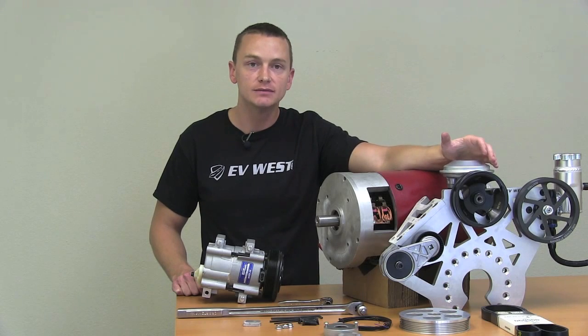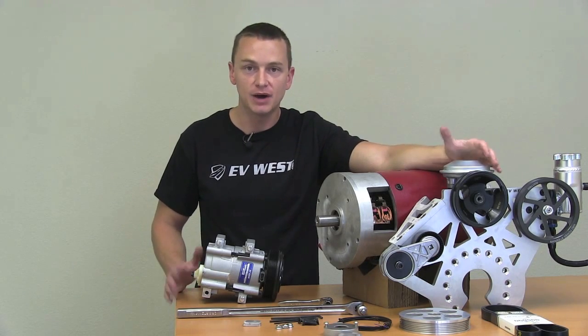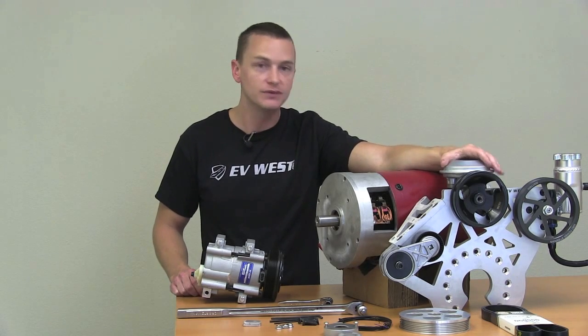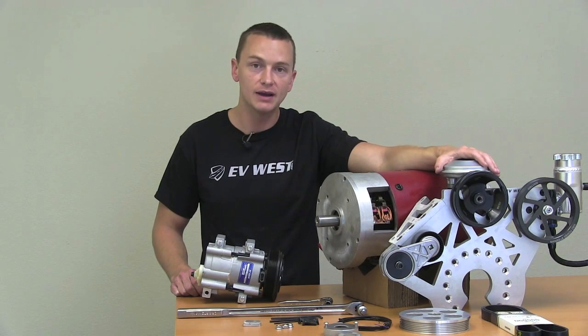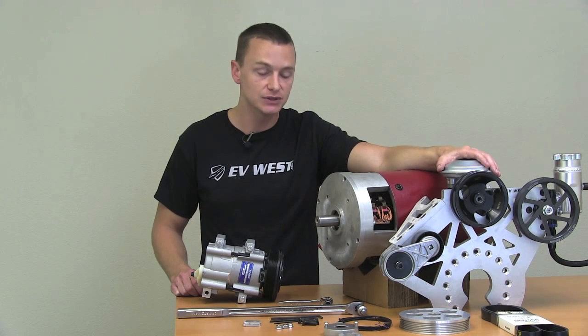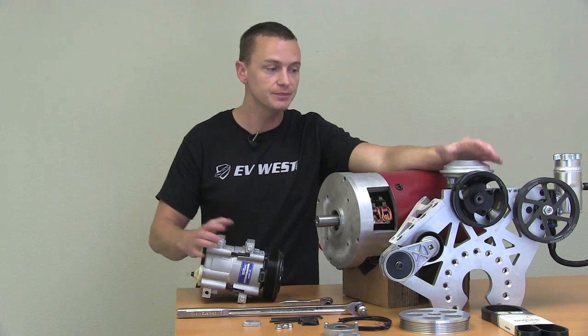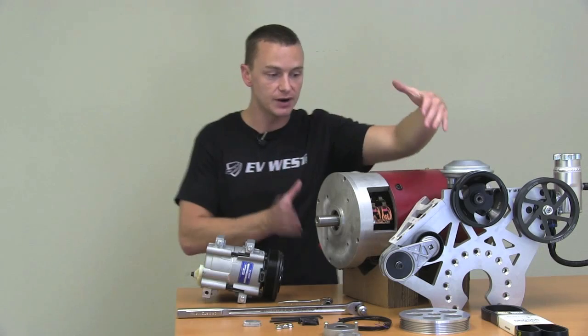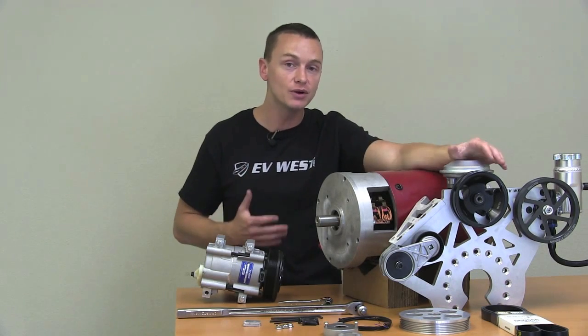One of the biggest questions we get here at EV West is what do you do about power brakes, power steering, and air conditioning? We've put together a great kit that mounts on the front of any Warp 9 or Warp 11 motor. It's a very cost-effective solution that will give you belt-driven air conditioning, power brakes, and power steering, all from a very modular small kit that just bolts right on the front of this motor. Very universal kit.